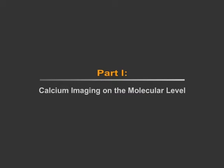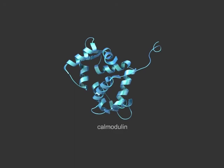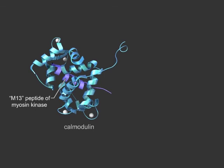In order to detect the movement of calcium ions during neuronal signaling, a genetically engineered calcium indicator, or GCAMP, is required. GCAMP is a hybrid calcium sensor encoded by the calcium-binding messenger protein calmodulin, the calcium and calmodulin binding M13 peptide of myosin kinase, and the fluorescent protein GFP.